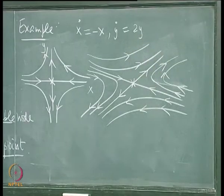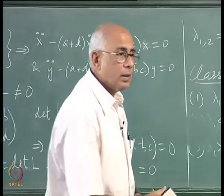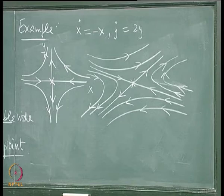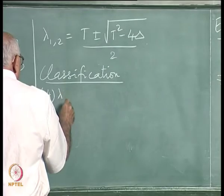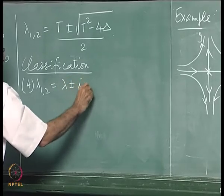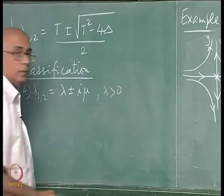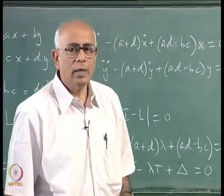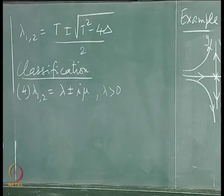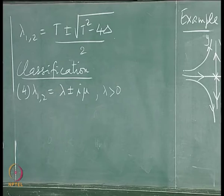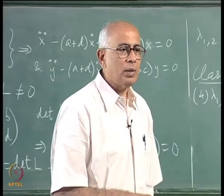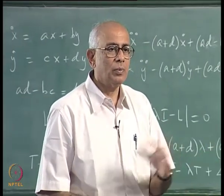We have complex eigenvalues possible. Since the coefficients are real, complex eigenvalues come as a complex conjugate pair. So we look at λ₁,₂ = α ± iμ where α and μ are real. The behavior is not crucially dependent on whether μ is positive or negative. On the other hand, e^(iμt) gives cosines and sines of μt, and the factor e^(αt) drives the amplitude: if α > 0 it grows outward; if α < 0 it decays inward.